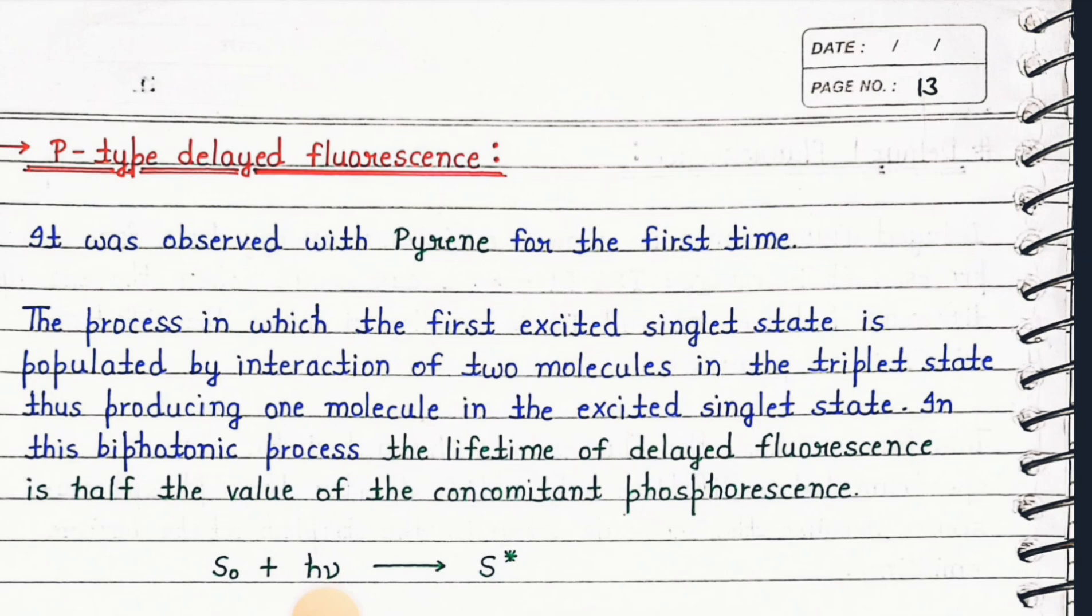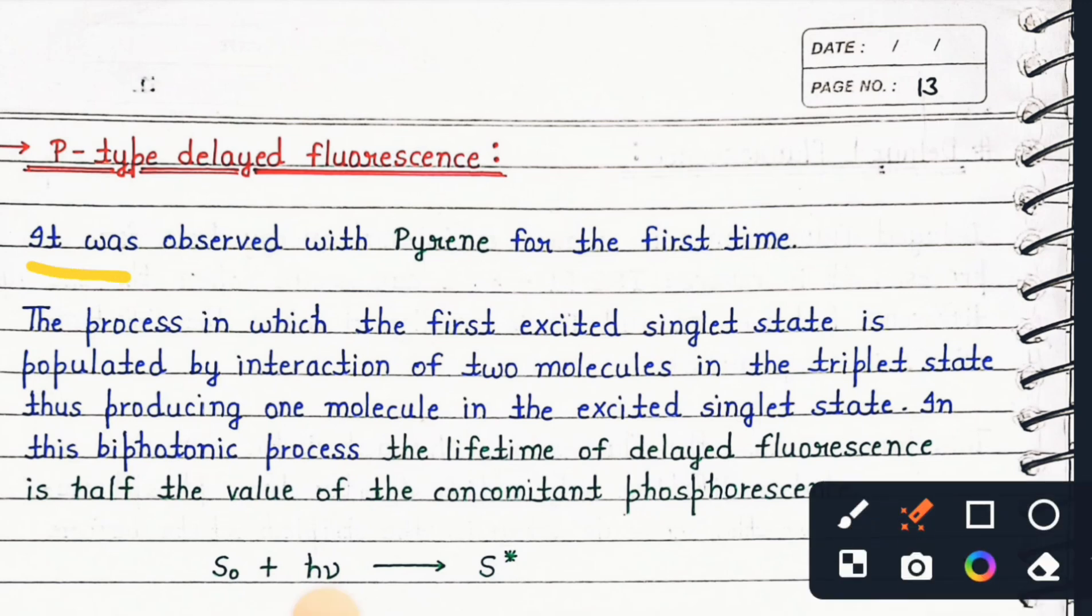P-type delayed fluorescence was observed with pyrene for the first time. The process in which the first excited singlet state is populated by interaction of two molecules in the triplet state, thus producing one molecule in the excited singlet state. In this biphotonic process, the lifetime of delayed fluorescence is half the value of the concomitant phosphorescence.